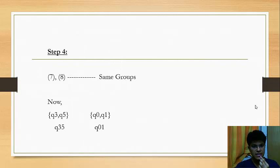So, we see that they are the same groups. So, we give Q3 and Q5 as Q35 and Q0 and Q1 as Q01. We concatenate the numbers of the multiple states in the same group. As both steps give us the same group, so we actually stop here and we don't proceed further.